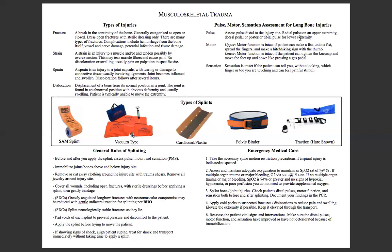We're not getting a rate — we're checking for 5 to 10 seconds and making a determination: it's present or it's not. For motor in the upper extremities, evaluate whether the patient can make a fist, undo the fist, spread their fingers, or make a hitchhiking sign with their thumb — that tells us motor function is intact. For lower extremities, have them tighten the kneecap and try to move the foot up and down like pressing on a gas pedal. We care about whether they are able to move. For sensation, it's intact if the patient can tell you — without looking, sometimes you ask them to close their eyes — which finger or toe you're touching, and whether they can feel painful stimuli like a pinch to the back of the hand.